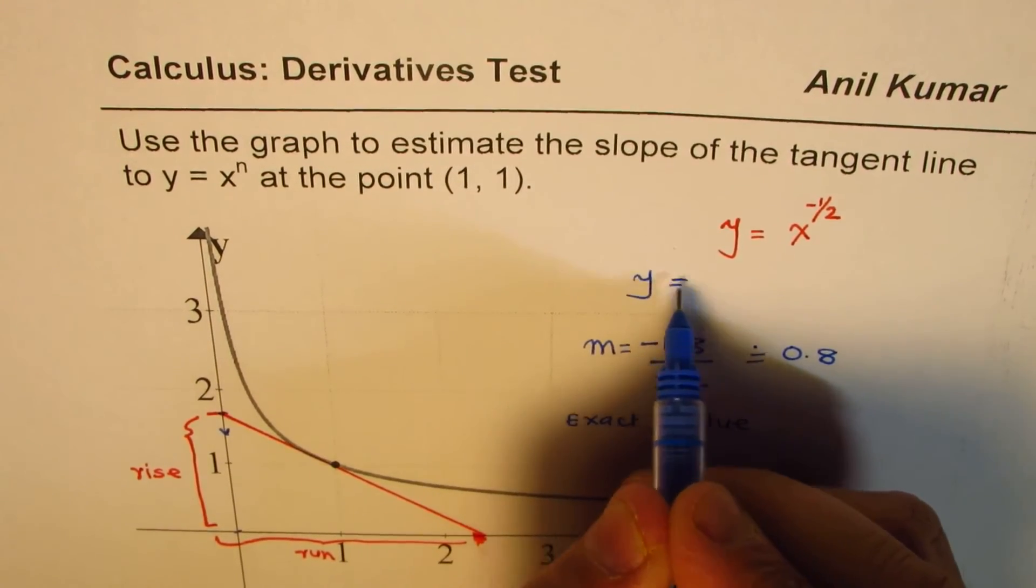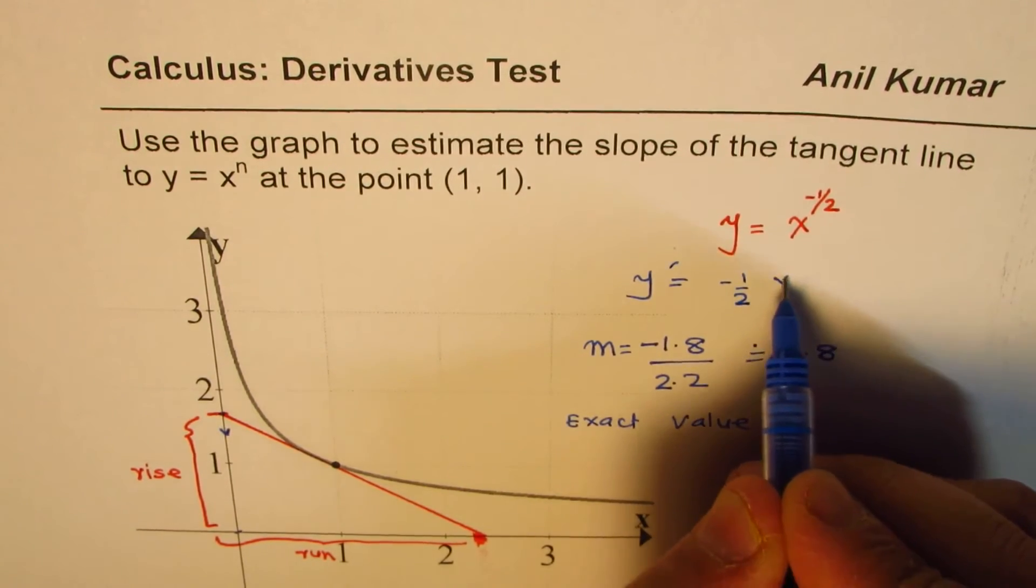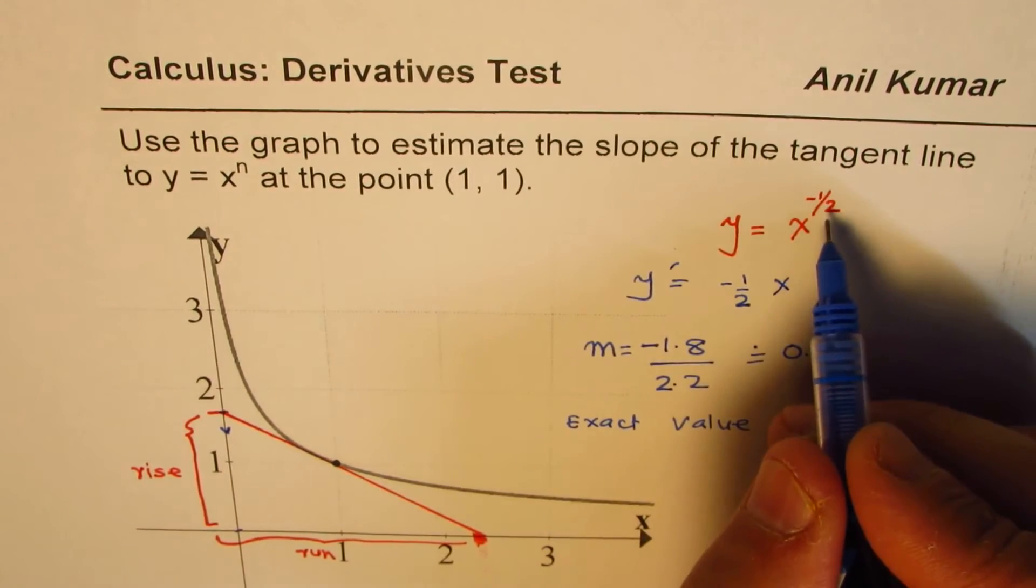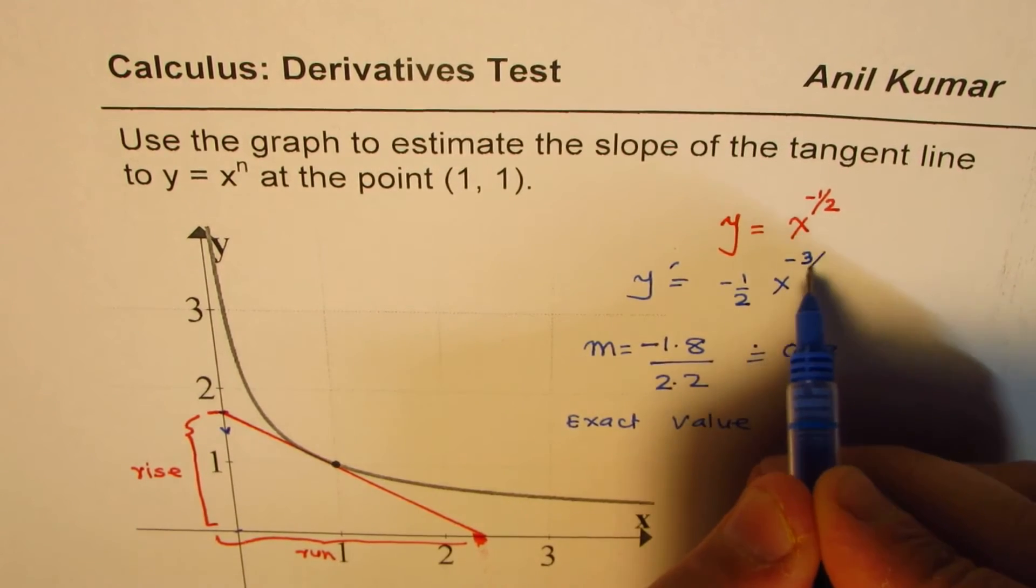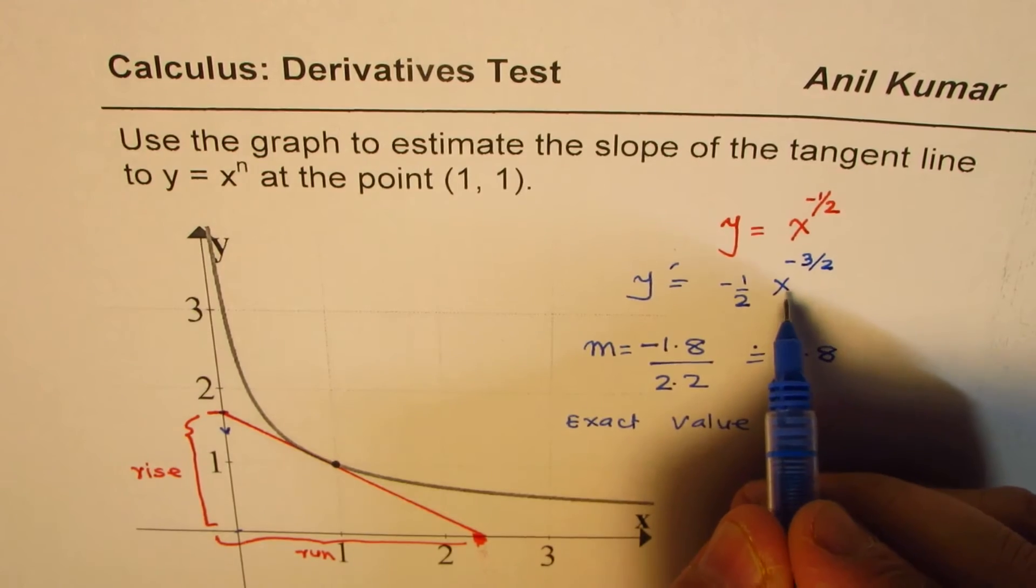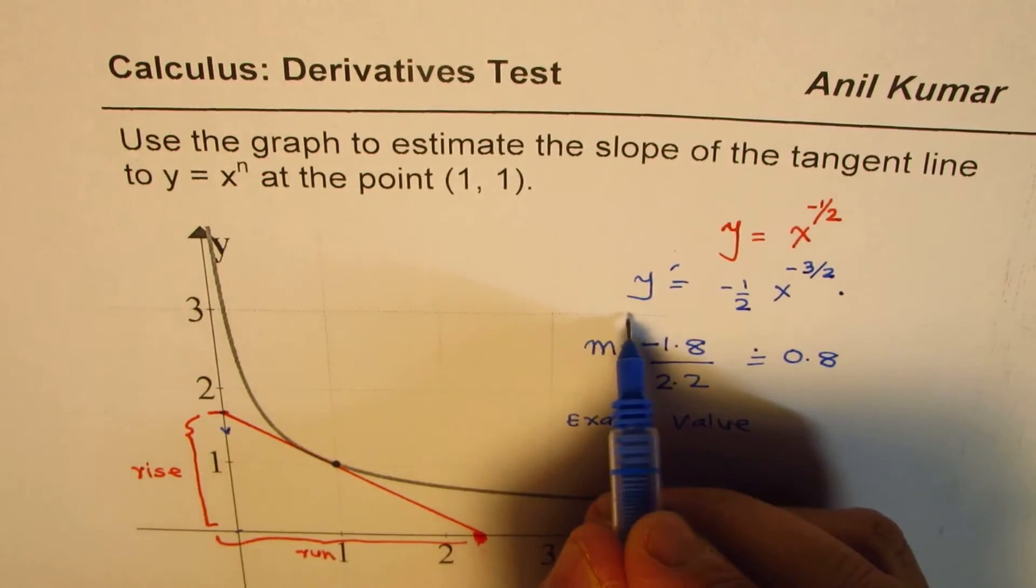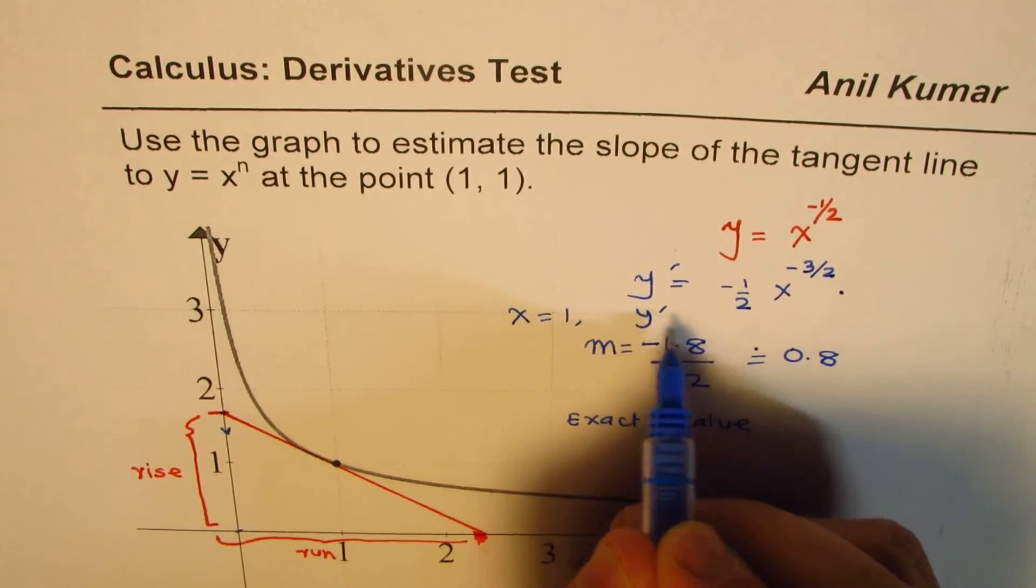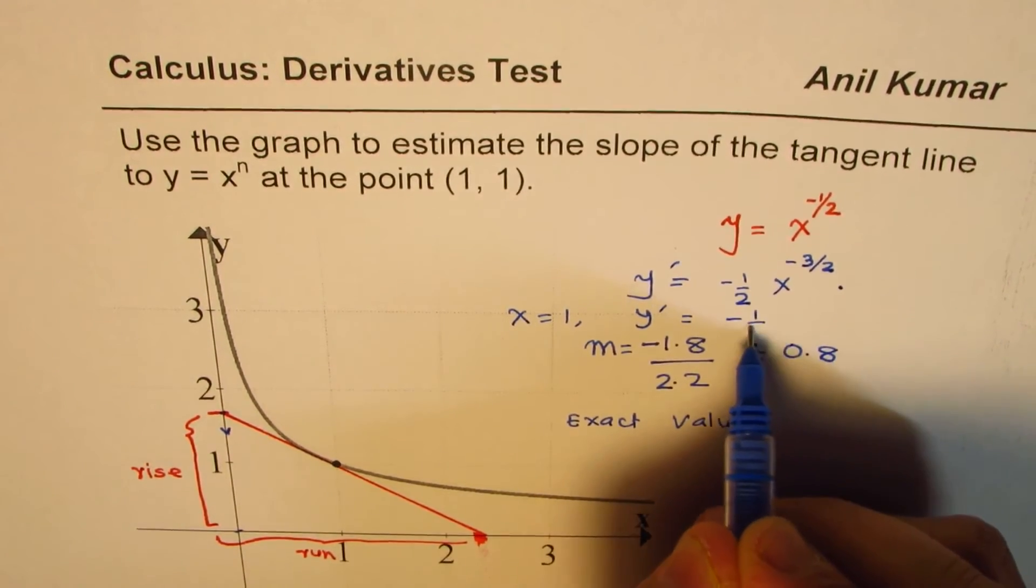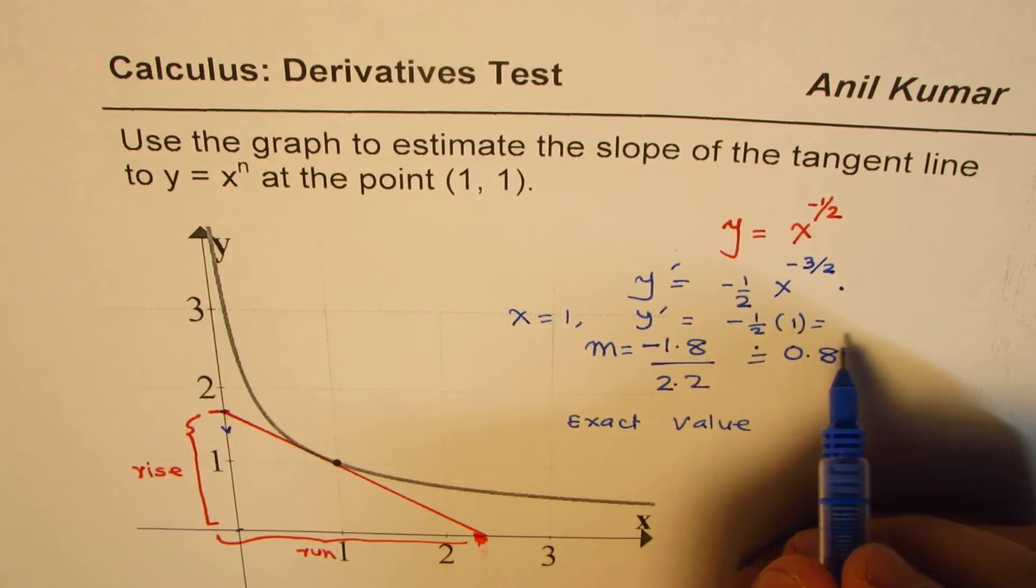Now if that is the function, then the derivative will be minus half x to the power of minus half minus 1. So it'd be minus 3 over 2. And if the point is 1, in that case we can write that the slope at x equals to 1, y' will be equals to minus half times 1.